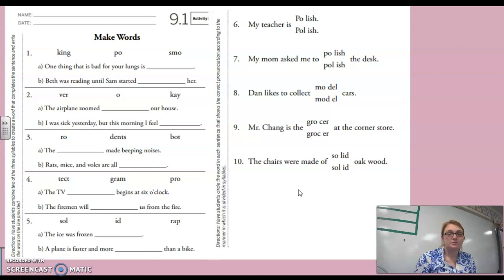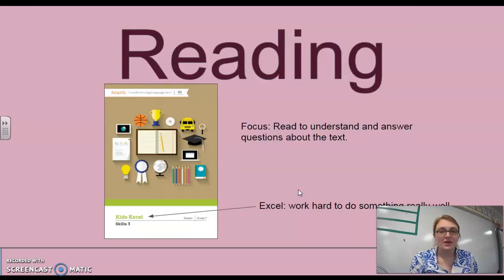And you'll continue that through one through five, making two different words for each box. Then on six through ten, you're going to do just like we just did together and circle the correct break of the word. For example, number six, my teacher is. Is your teacher Polish or Polish? In this case, the word is capitalized with capital P, so it's referring to the cultural background. So is she Polish, like from Poland, or Polish, like the furniture polish you use on your table? That's Polish. Okay, so we said smoking. And then number one B, Beth was reading until Sam started poking her.